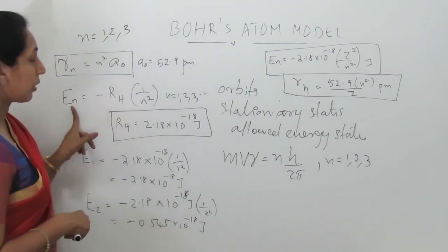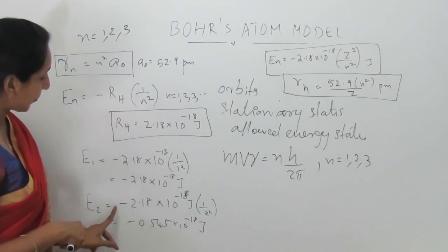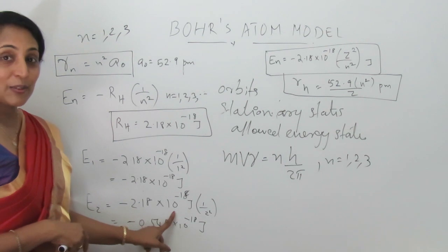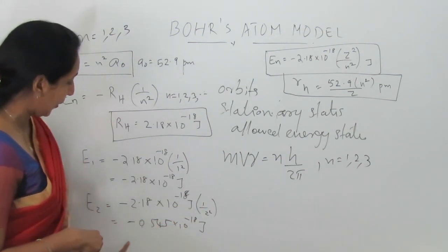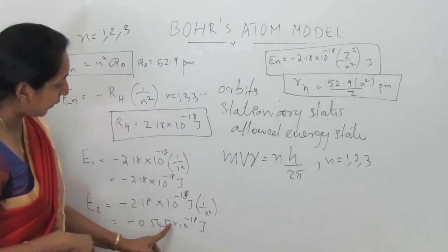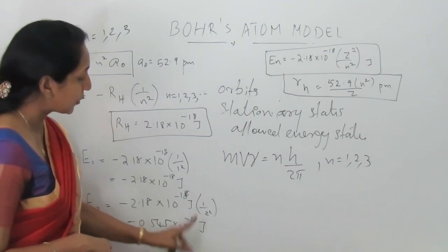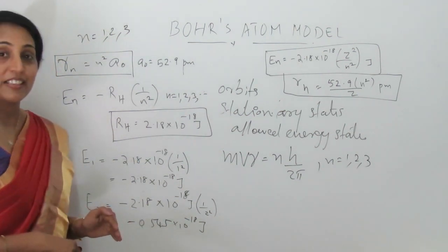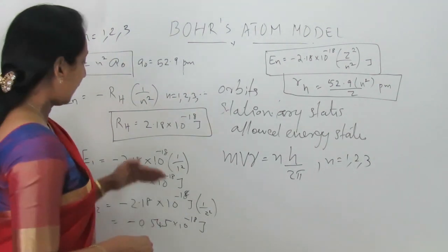For the second orbit, E2 = −2.18 × 10⁻¹⁸ J × (1/2²), which gives the value −0.545 × 10⁻¹⁸ J. We can similarly calculate the energy for orbit 1 and orbit 2 and compare them.